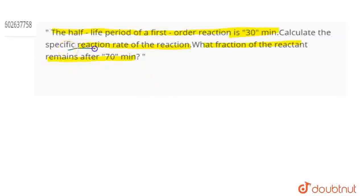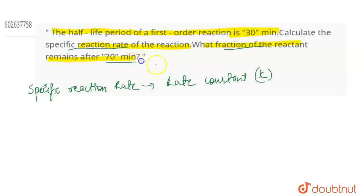The specific reaction rate of the reaction is basically your rate constant. It is just your rate constant—you have to calculate k. And if you're asked what fraction of the reactant remains after 70 minutes, this means you have to calculate the ratio of A by A0.